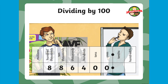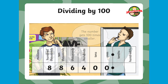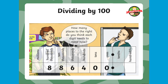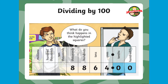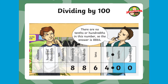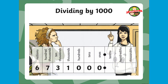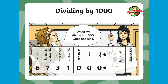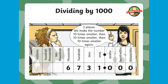When dividing by 100, our numbers will be moving to the right but this time two places. So 886,400 divided by 100 becomes 8,864. Finally, dividing by 1000: 6,731,000 divided by 1000 will move three spaces over to the right, giving us 6,731.